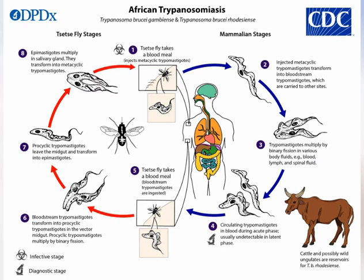The procyclic trypomastigotes multiply further, leave the midgut of the tsetse fly, and transform again into epimastigotes. These epimastigotes multiply in the salivary gland of the tsetse fly and transform again into metacyclic trypomastigotes, and the cycle repeats itself — another tsetse fly takes a blood meal and keeps injecting.